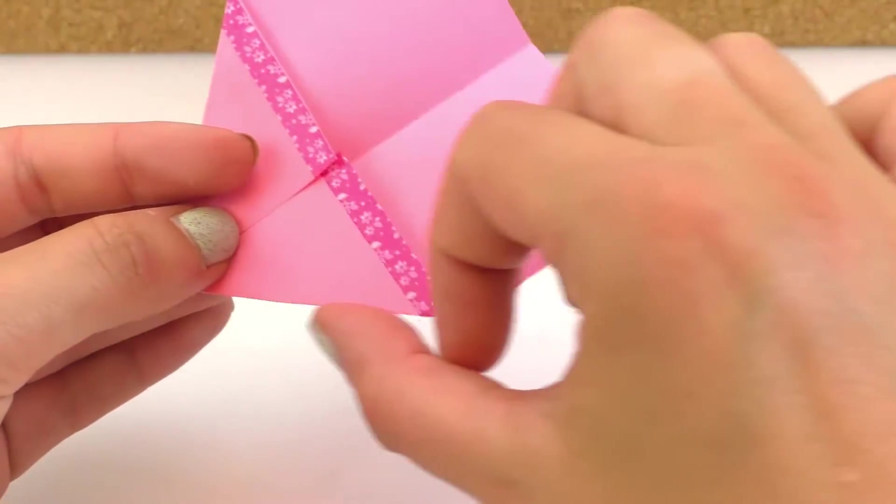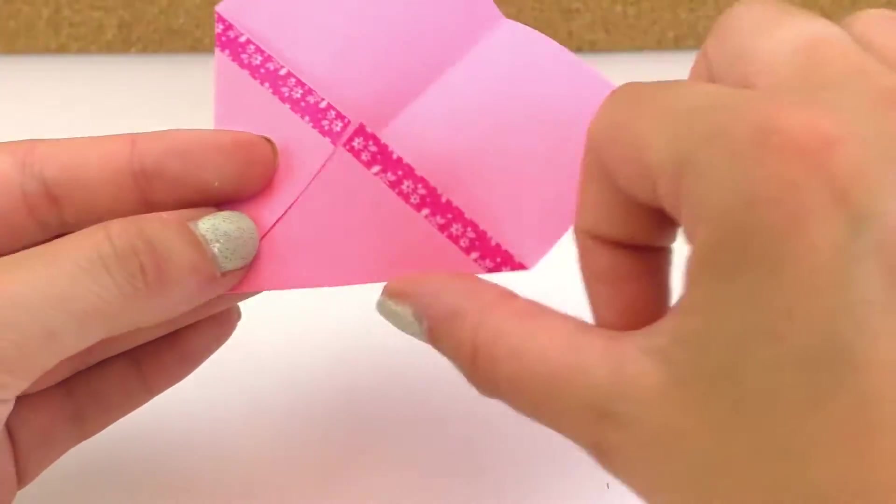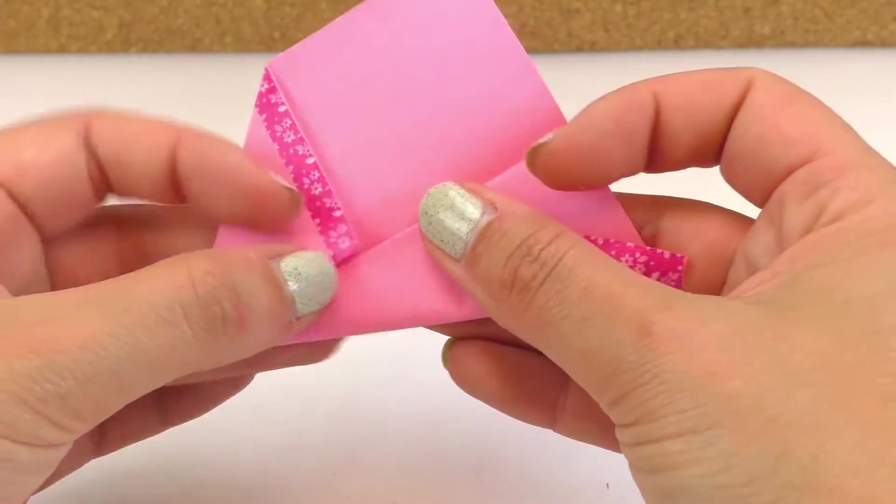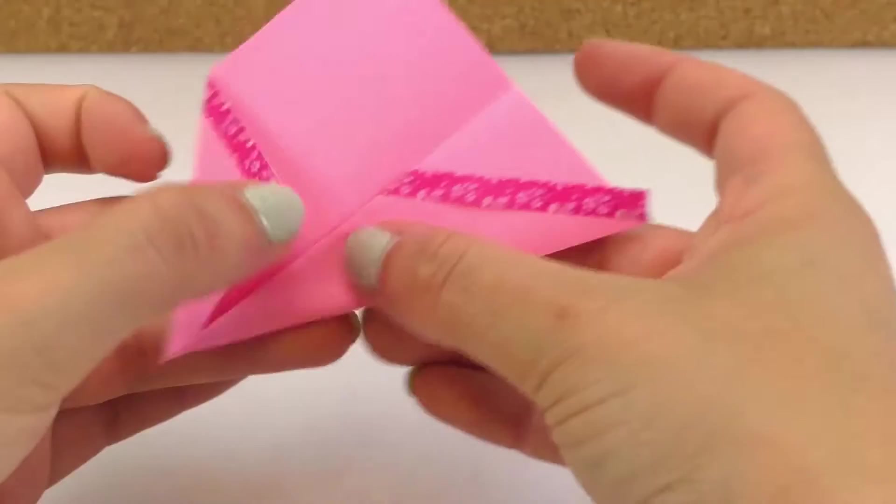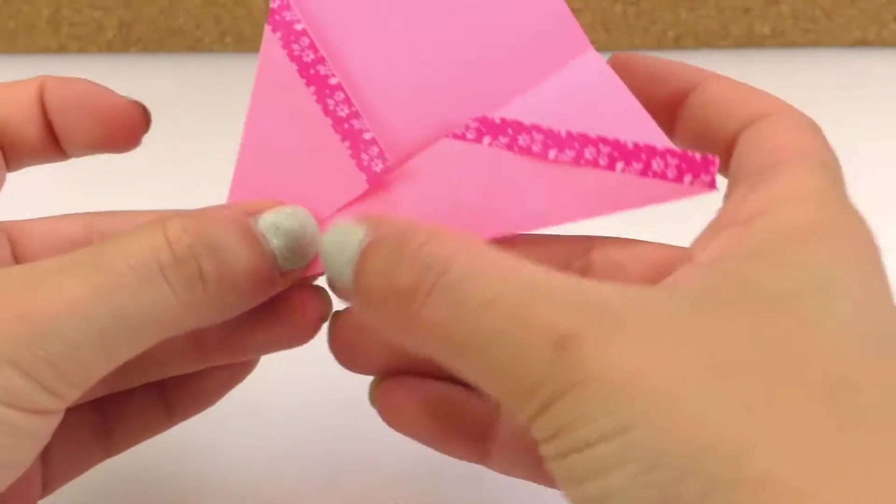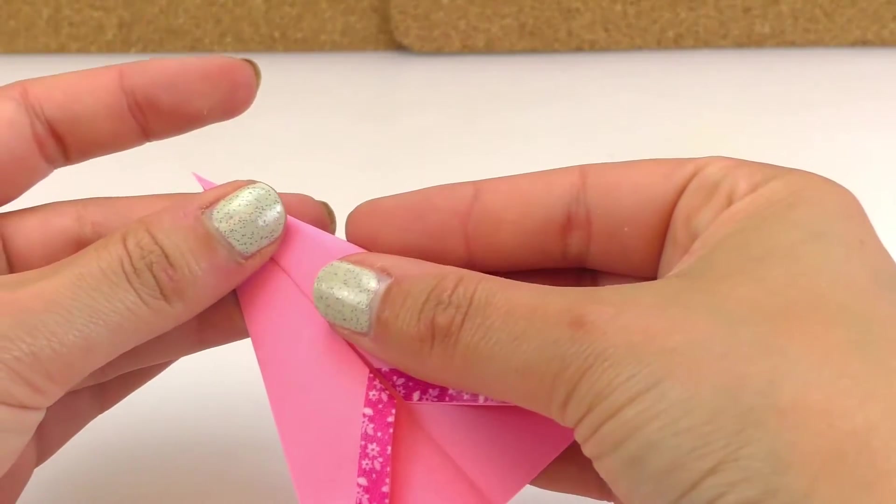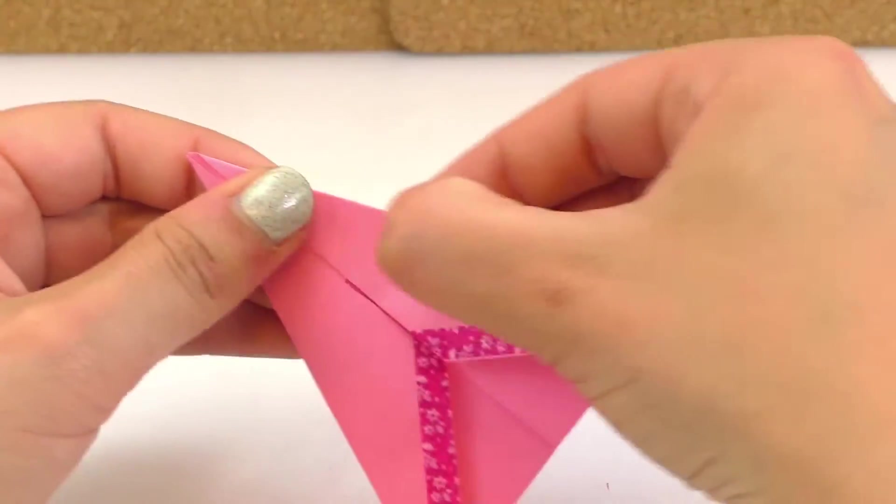Now we're going to grab the bigger side of the triangle, this one right here, and fold it all the way to the middle. We'll do the same thing with the other side, grabbing the big side of the triangle and folding it to the middle.